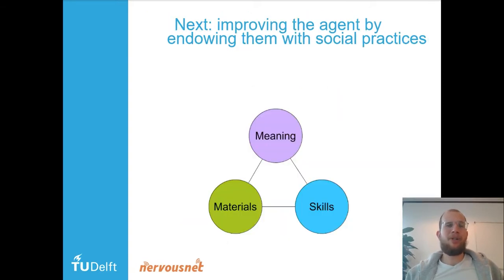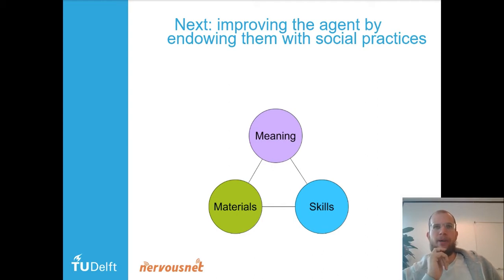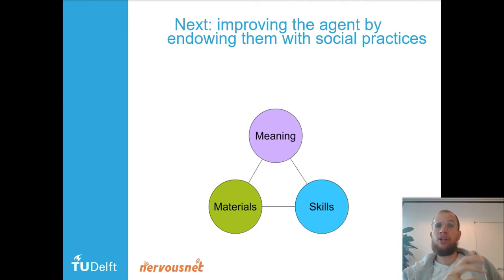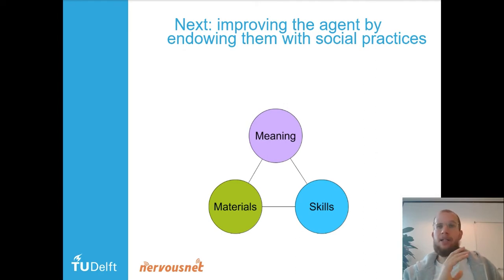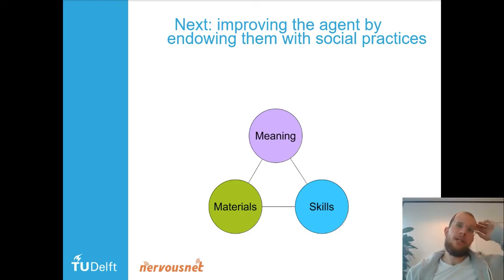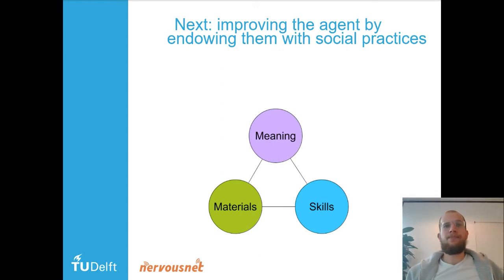What are we going to do next? We're going to improve the agent by endowing it with social practices. Social practices are a concept from sociology that describes our daily practices — like discussing, commuting, eating, or browsing the internet.